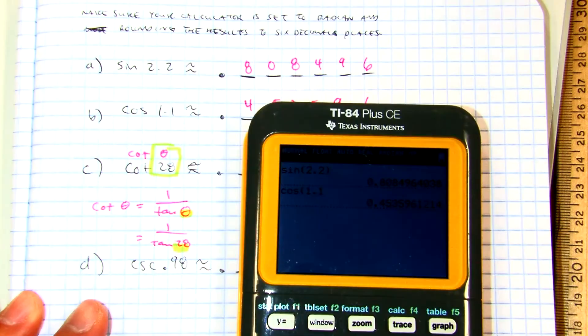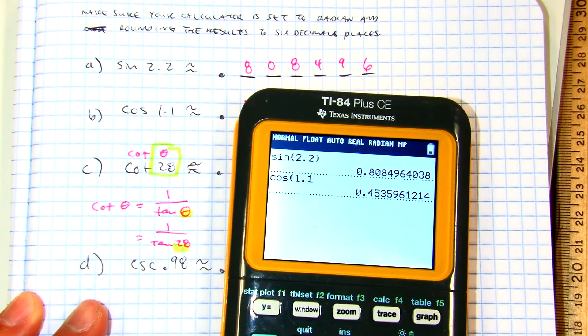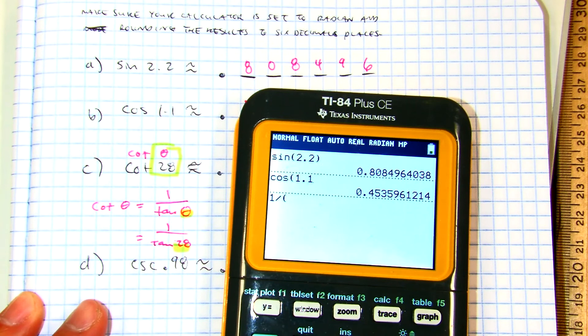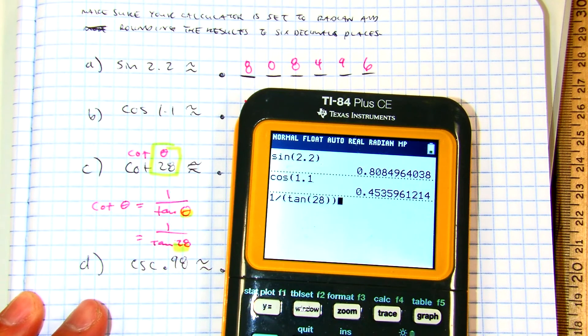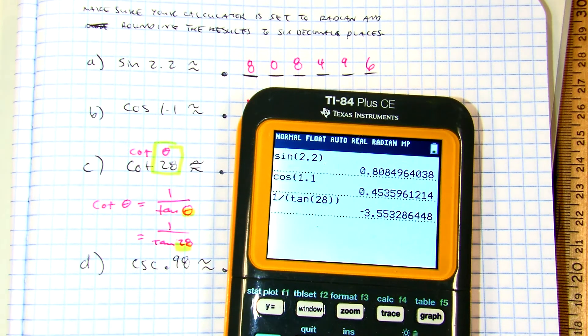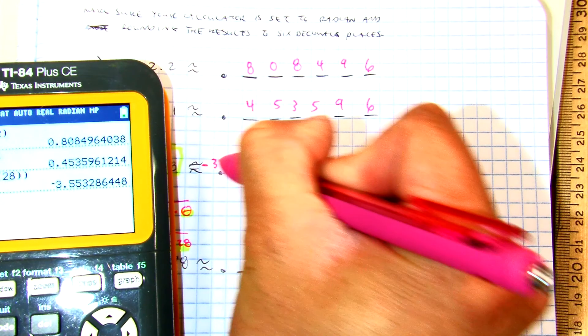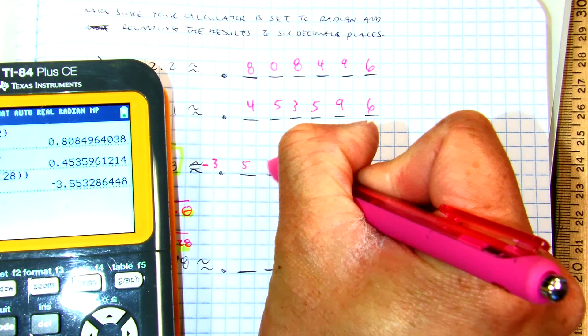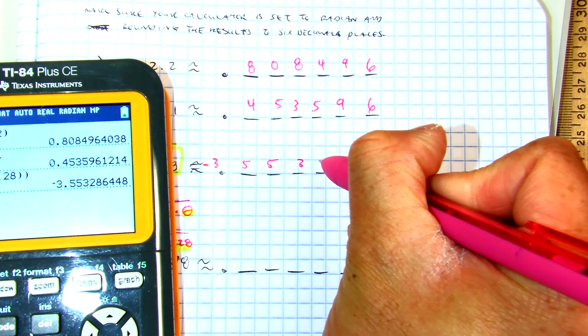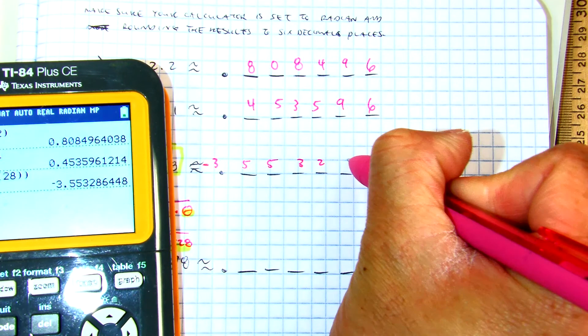So now I have 1 over tangent of 28 radians. So let's put that in our calculator. 1 divided, extra parentheses, 28. And we get a negative number. Negative 3.553286.